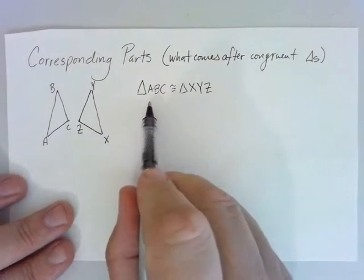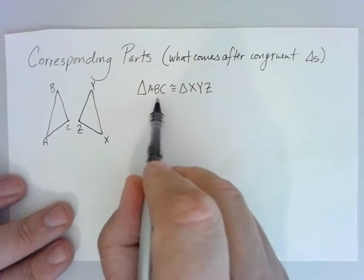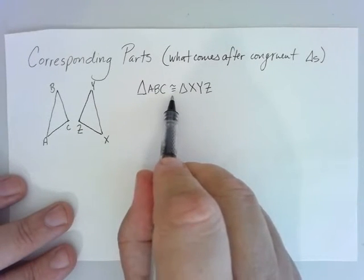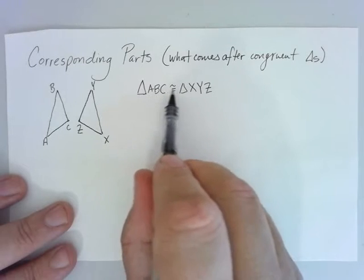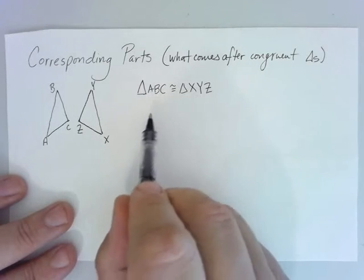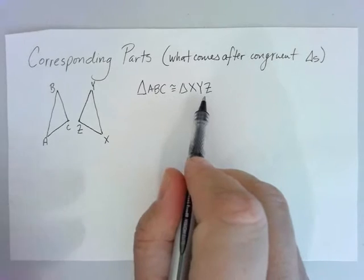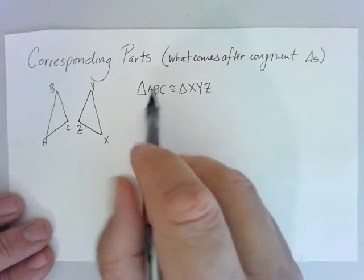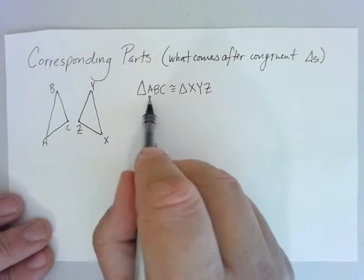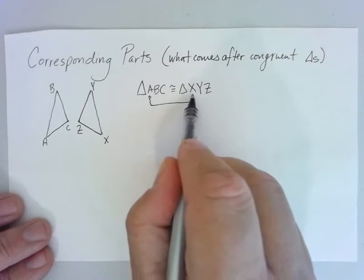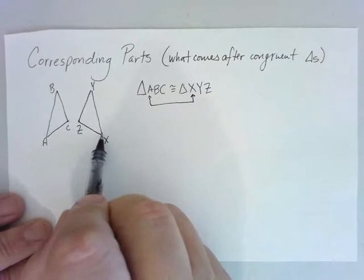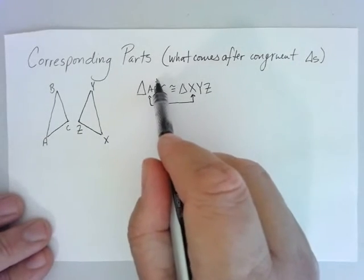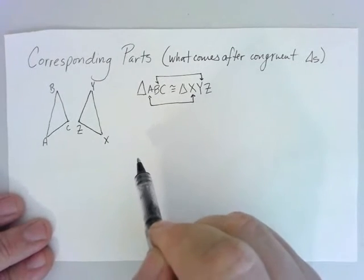When I write a triangle congruence statement, I'm free to choose the order of one of the triangles. But the congruence statement has to show how the vertices of the triangles pair up with each other. When I write triangle ABC congruent to triangle XYZ, I am saying something more: the vertex at A corresponds with the vertex at X, and the vertex at B corresponds with the vertex at Y.